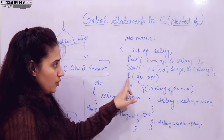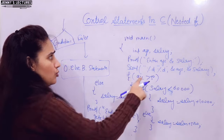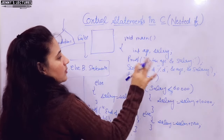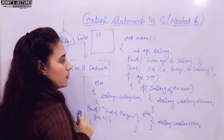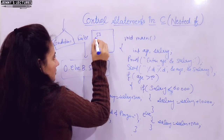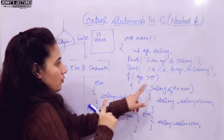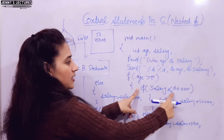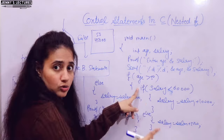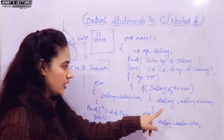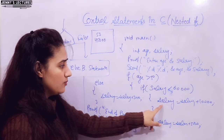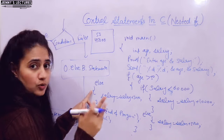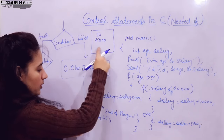This is the nesting of if — one if with another if written inside it. Suppose you run the program and enter age = 53 and salary = 45,000. First, age > 50 is checked — 53 is greater than 50, so true. Control enters the if block. Salary < 60K — 45,000 is less than 60K, so true. Salary is incremented by 10,000, giving 55,000. The else blocks are not executed. Then 'end of program' is printed.